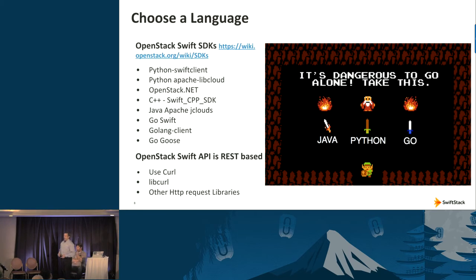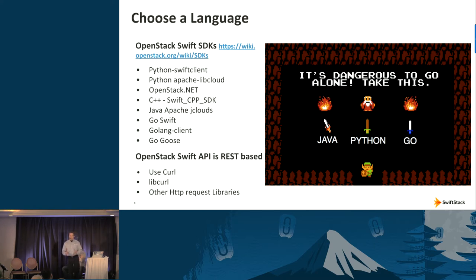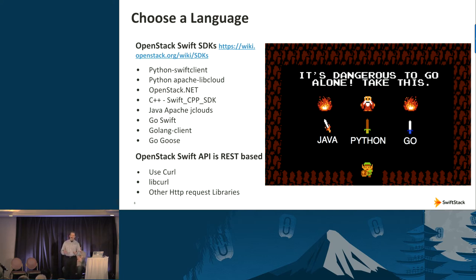To do these projects, you first need to pick a language. The community has been around for several years and there are several SDKs. Whether you prefer Go, Python — the typical OpenStack language — or Java, you have tools and libraries available to easily consume OpenStack Swift. If your language isn't listed, modern languages will have a curl or requests library supporting standard HTTP commands: GET, PUT, and all normal RESTful operations.